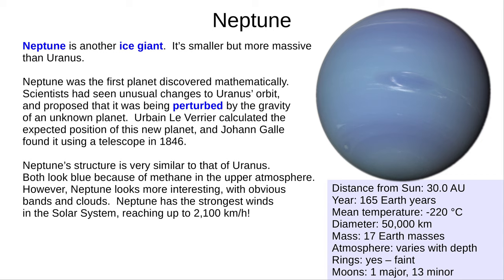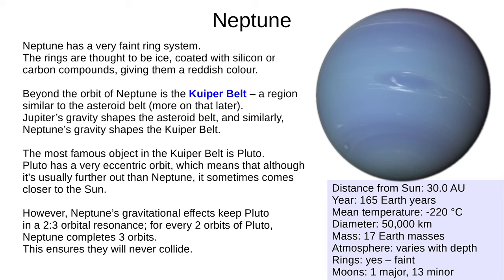Our last planet, Neptune, is another ice giant — smaller but more massive than Uranus. Neptune was the first planet to be discovered mathematically: scientists had seen unusual changes to Uranus's orbit, and proposed it was being perturbed by the gravity of an unknown planet. Urbain Le Verrier calculated the position of this new planet, and Johann Galle found it with a telescope in 1846. Neptune's structure is very similar to Uranus, and both look blue because of methane in the upper atmosphere. Neptune has the strongest winds in the solar system, reaching 2,100 kilometres per hour, and a very faint ring system thought to be ice particles coated with silicon or carbon compounds. Beyond Neptune's orbit is the Kuiper belt — Neptune rules the Kuiper belt just as Jupiter's gravity shapes the asteroid belt.